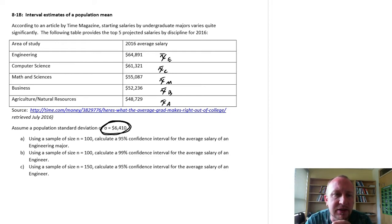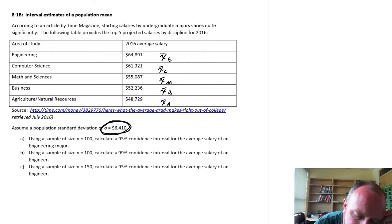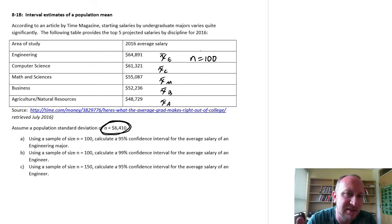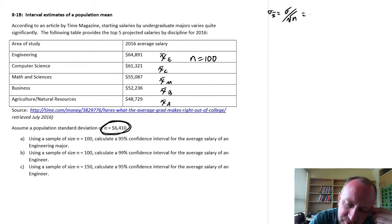So part A, using a sample size of n equals 100, calculate a 95% confidence interval for the average salary of an engineer. So what we're going to do here, again I'm making assumptions because I'm just playing with different data here. But let's assume here first that we're going to have a sample size of 100. That gave us this sample mean of $64,891. So the first thing that we can do is calculate our standard error. So the standard error is going to be the standard deviation divided by the square root of the sample size. And so here this is $6,410 divided by square root of 100. So that's $6,410 divided by 10, so $641.